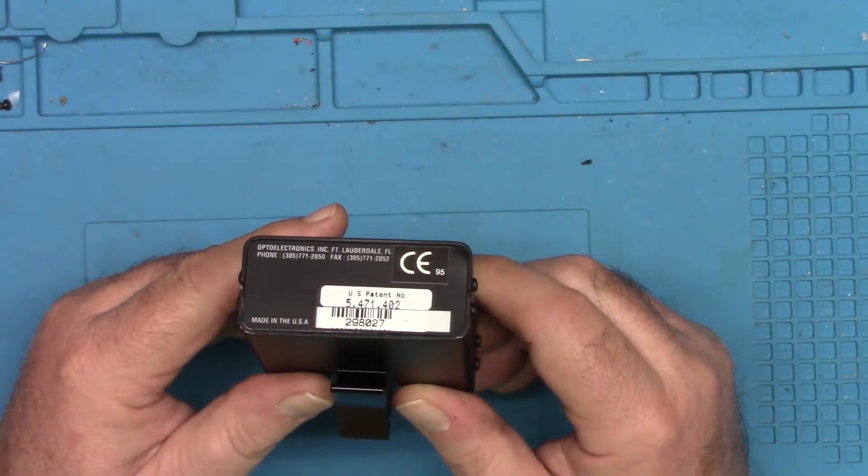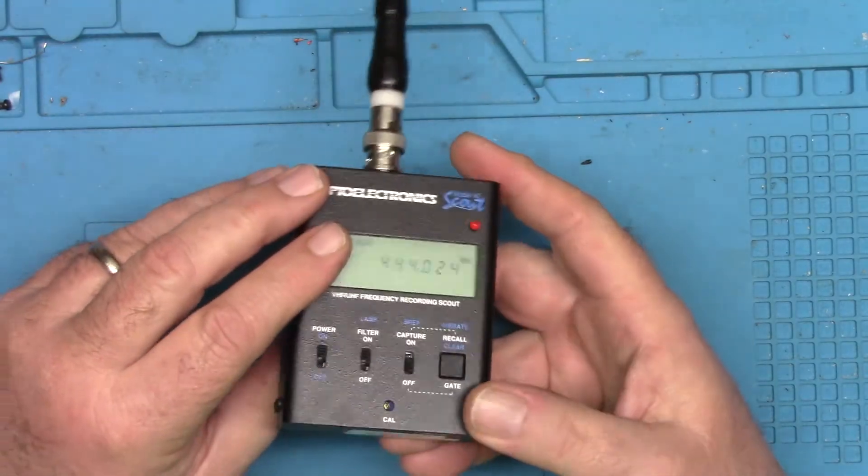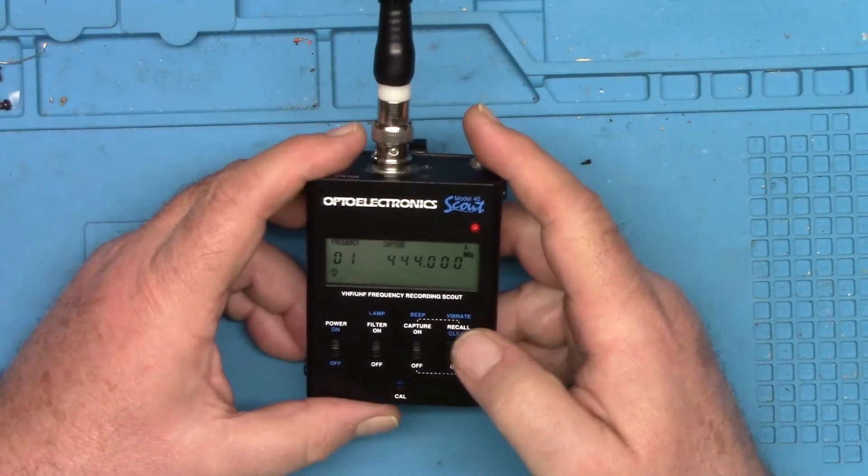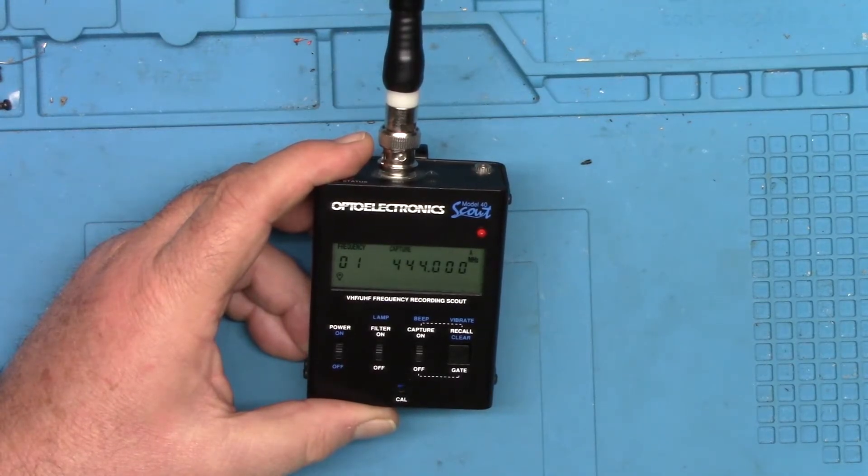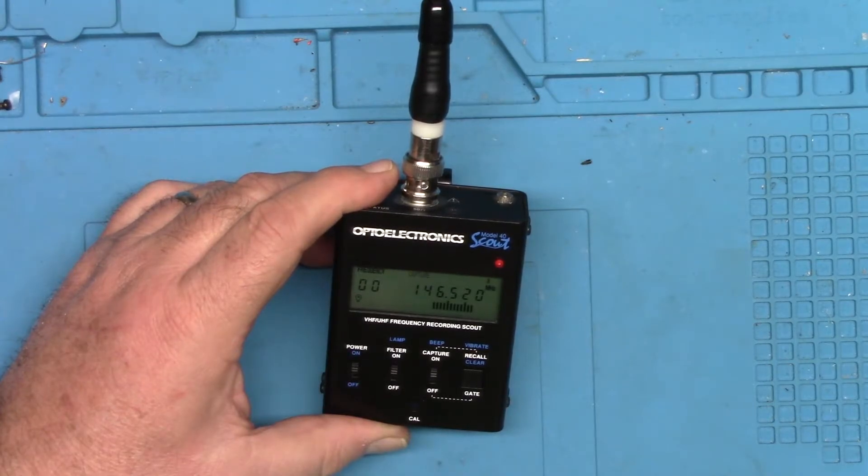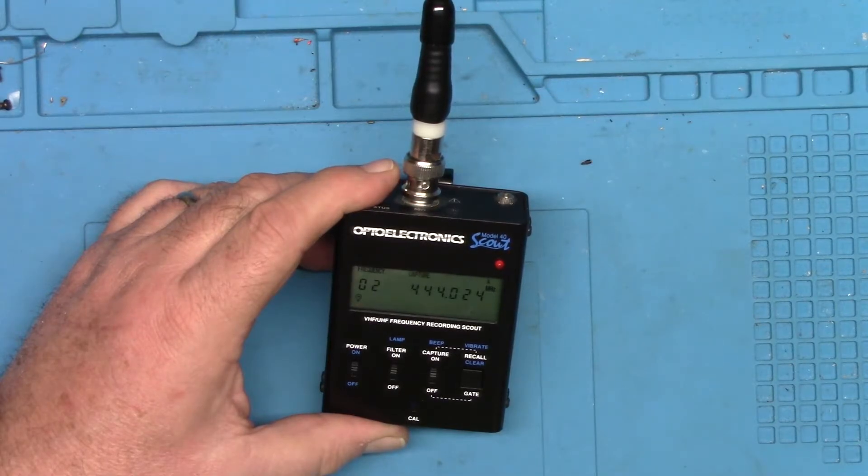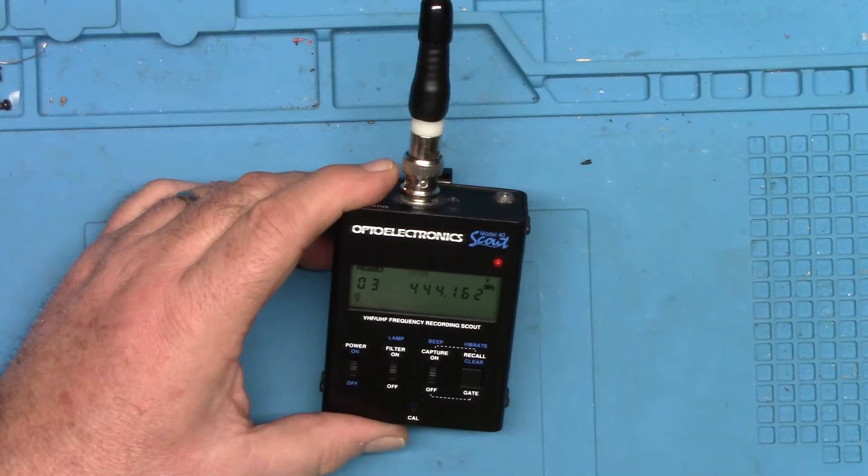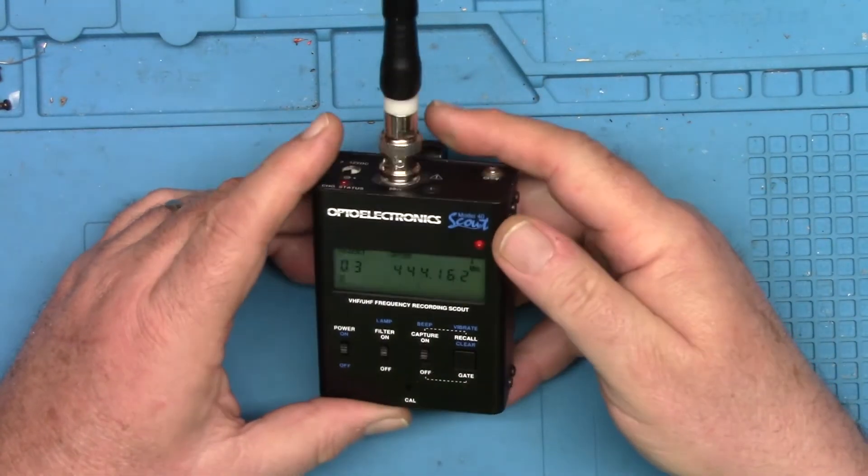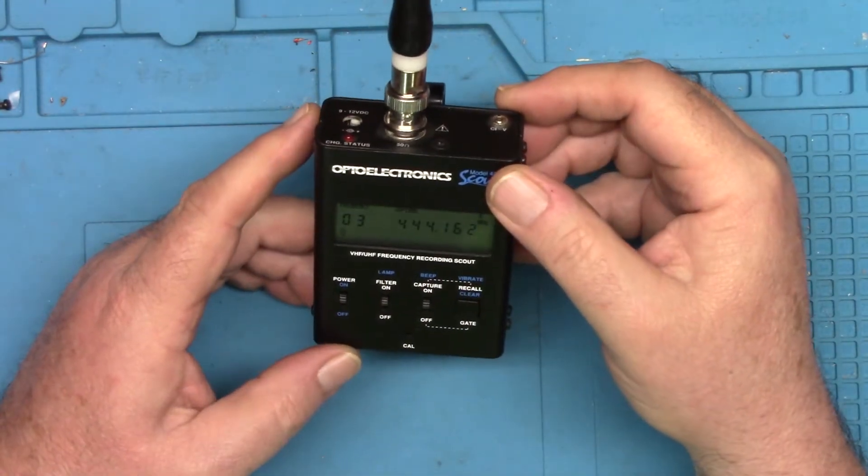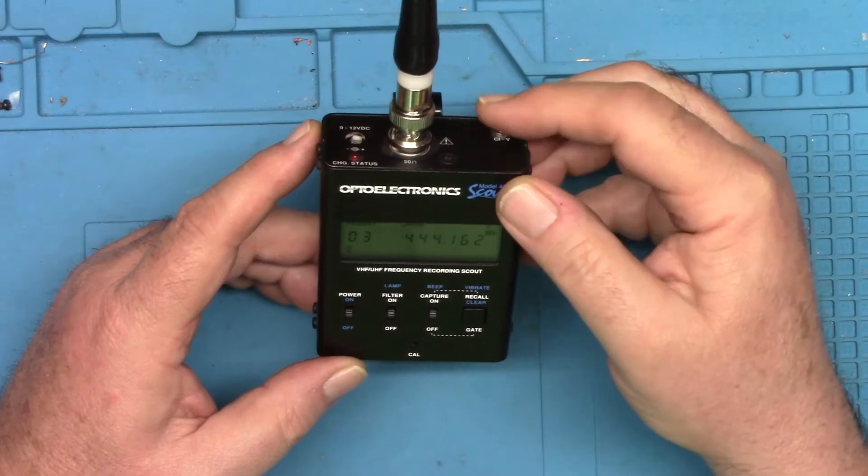This is the information on the bottom of this guy, made by Optoelectronics. I believe they still make these. This is, again, a very old model. I can set filtering. Now I've got it in capture mode, and so it's going to save the frequency and it should increment. Well, it zeroed it out. There we go. So now it's going to save them, and as I change frequencies... [Keys up] Yep, there we go. So now it's capturing these, so I can come back later and dump these out.